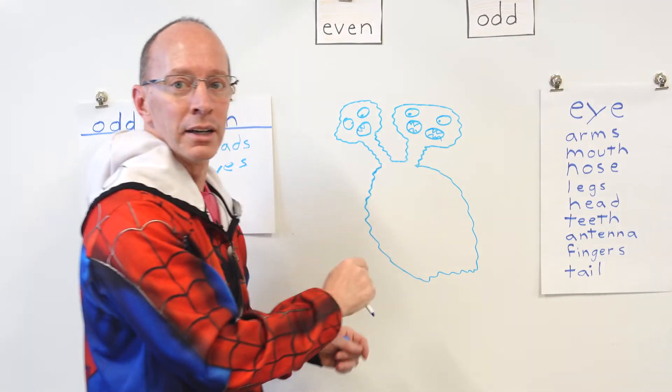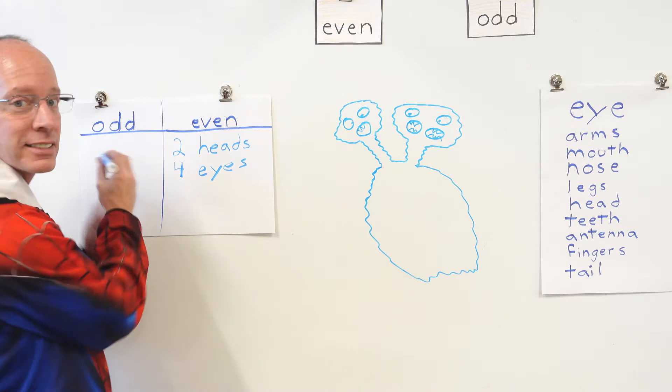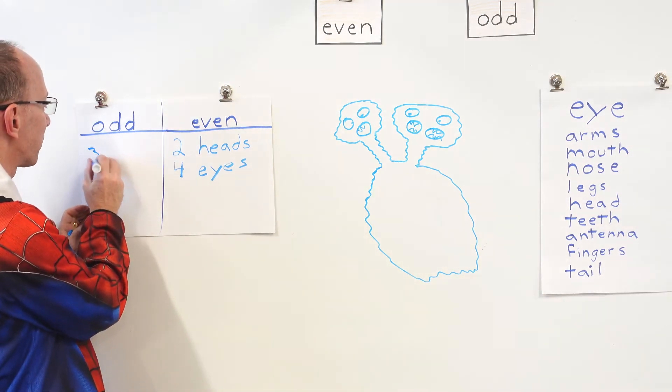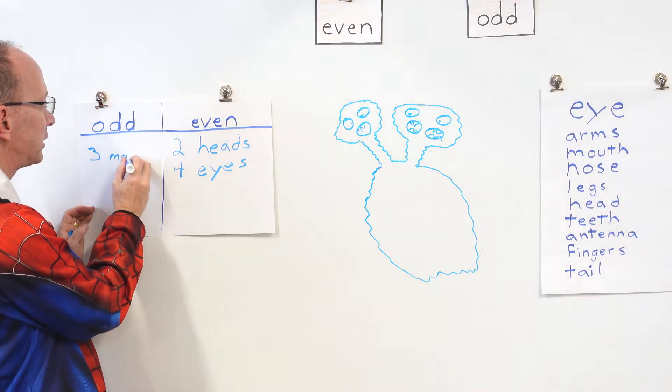So I have one, two, three. Bam. That's an odd number right here. Three mouths. How crazy is that?